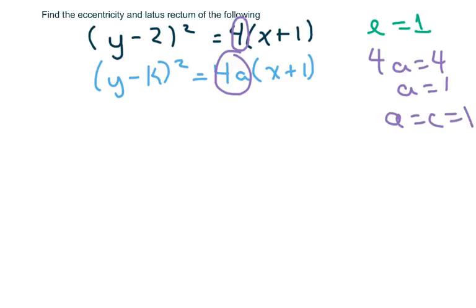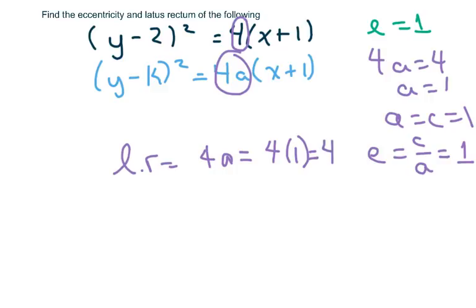Okay, so E equals C over A, which always is just 1. So that's the formula for that. And your LR is just going to be 4a equals 4 times 1, which equals 4. Basically, it's always right here.